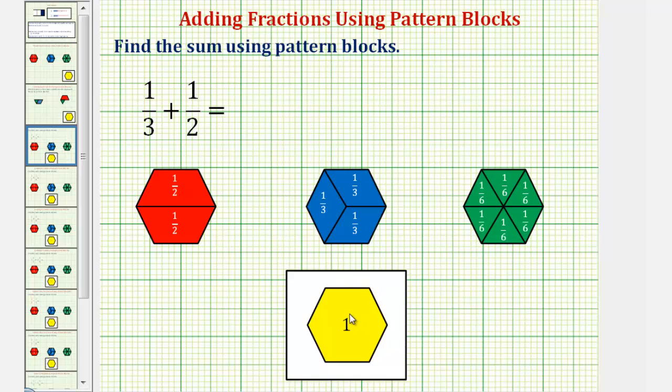Notice how if we cut or denominate this into two equal partitions or two equal pieces, as we see here, one red pattern block or one red trapezoid is equal to one-half.